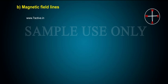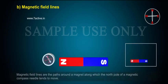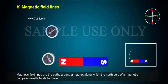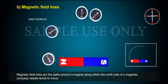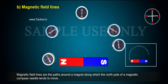B. Magnetic Field Lines. Magnetic field lines are the paths around a magnet along which the north pole of a magnetic compass needle tends to move.